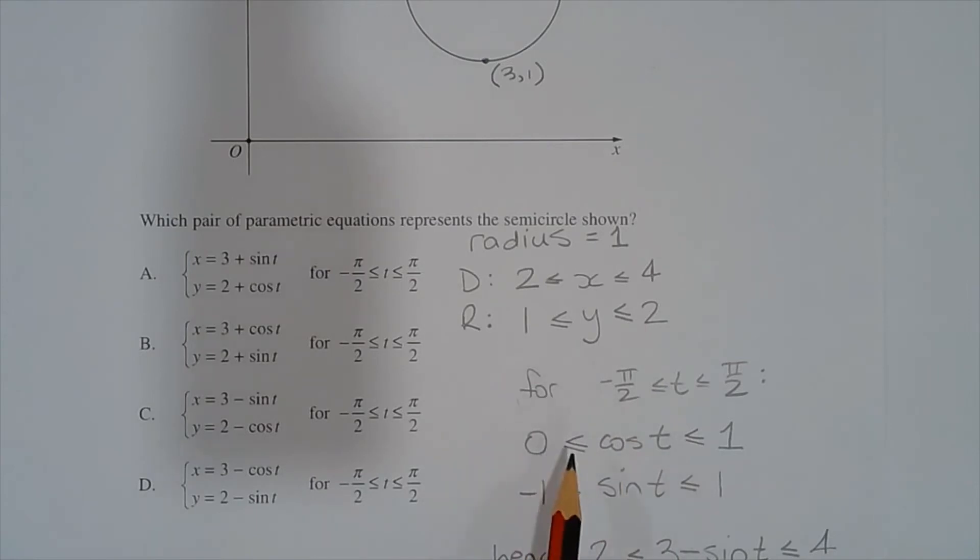Cos of t is greater than or equal to 0 and less than or equal to 1, and sine of t is greater than or equal to negative 1 and less than or equal to 1.